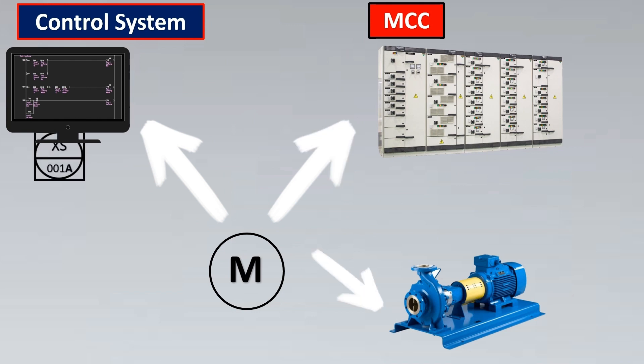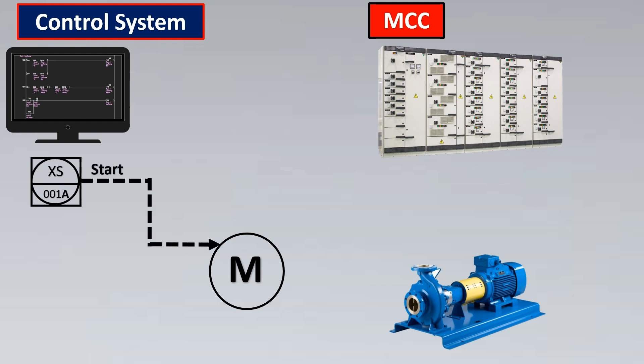Let's have a switch on the control system called XS. This switch is for an operator to turn on the motor. This hardwired signal is called a start switch. In the actual world of wiring, the start signal will go to the MCC, from the MCC it will go to the motor or the pump, and it will start the motor.